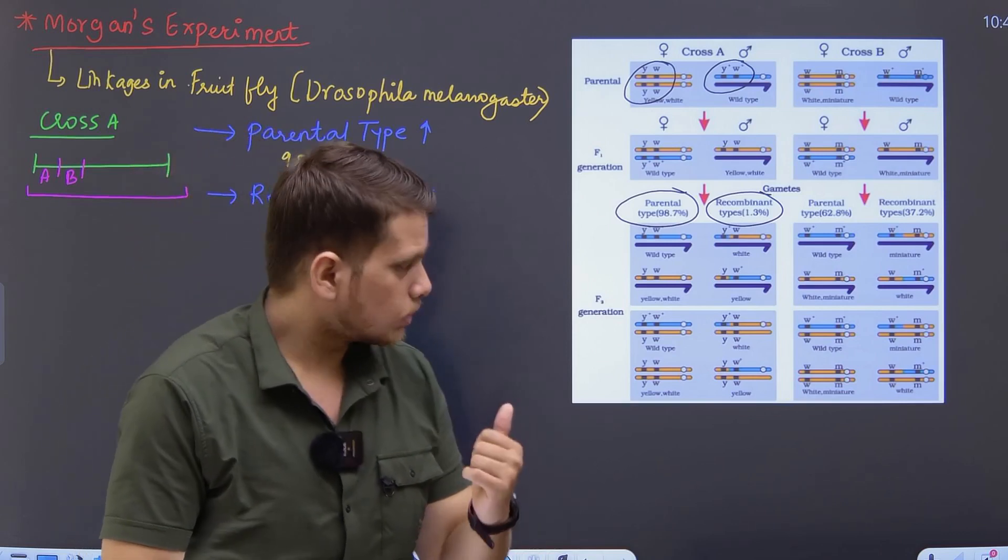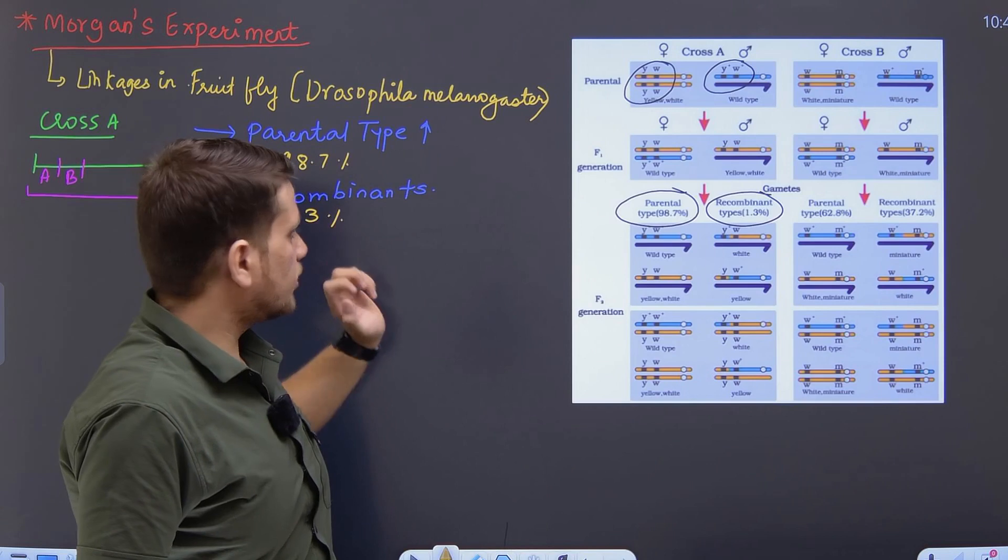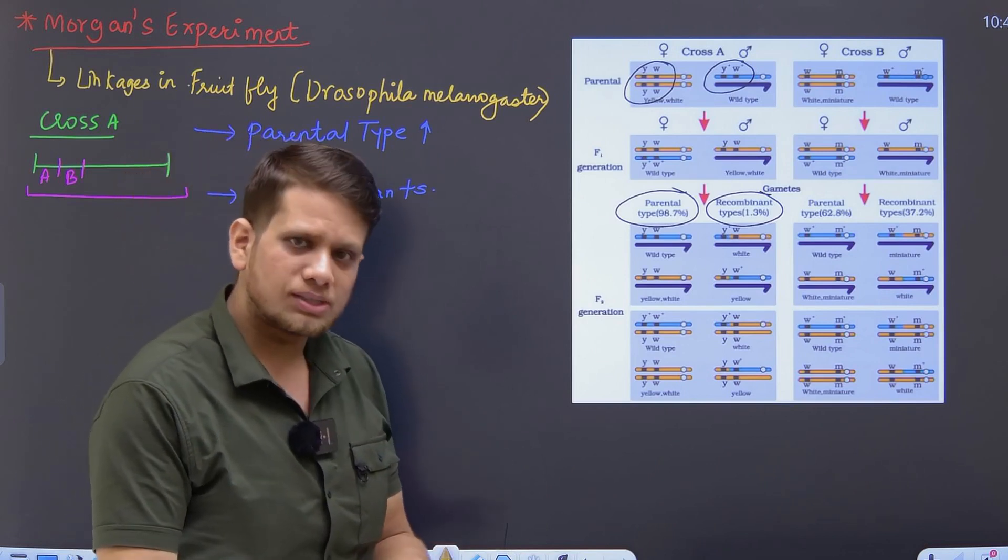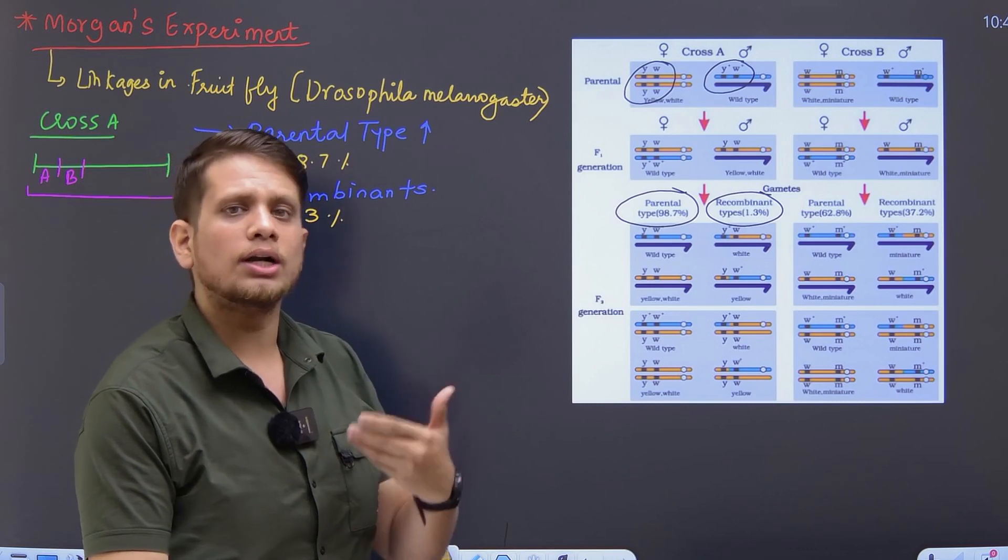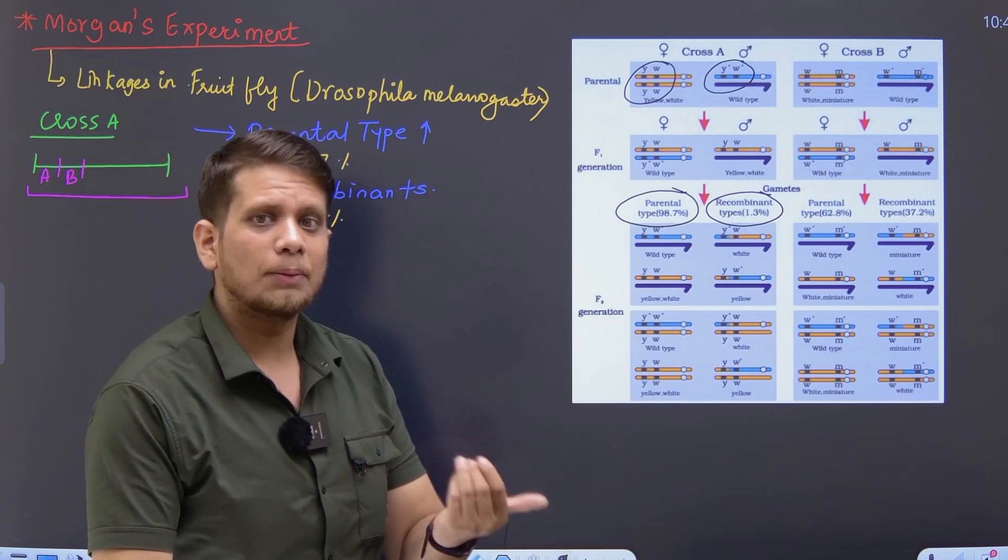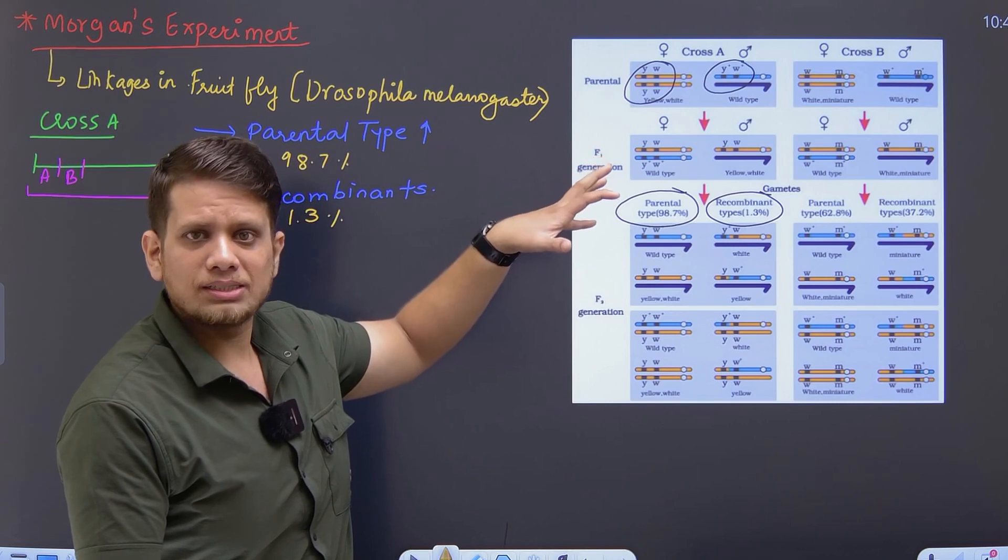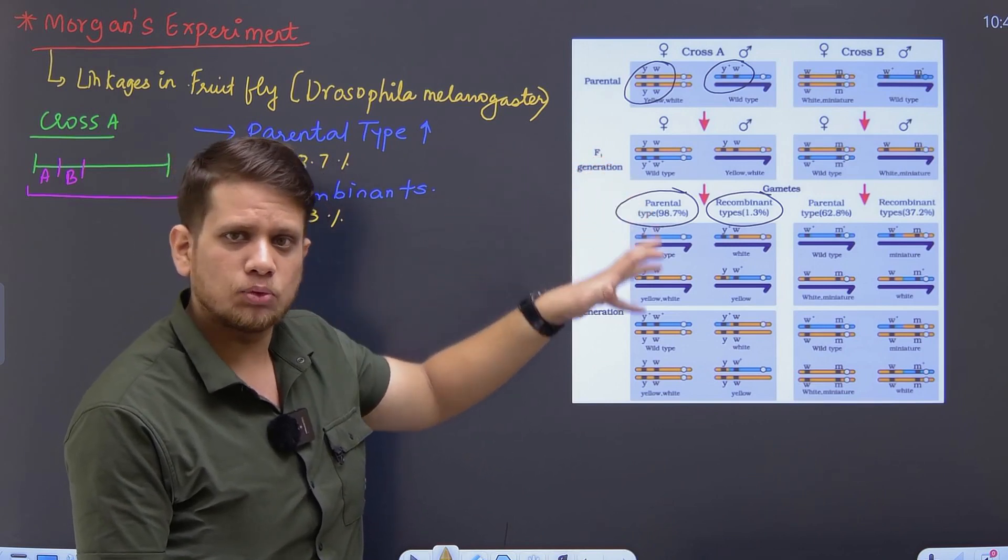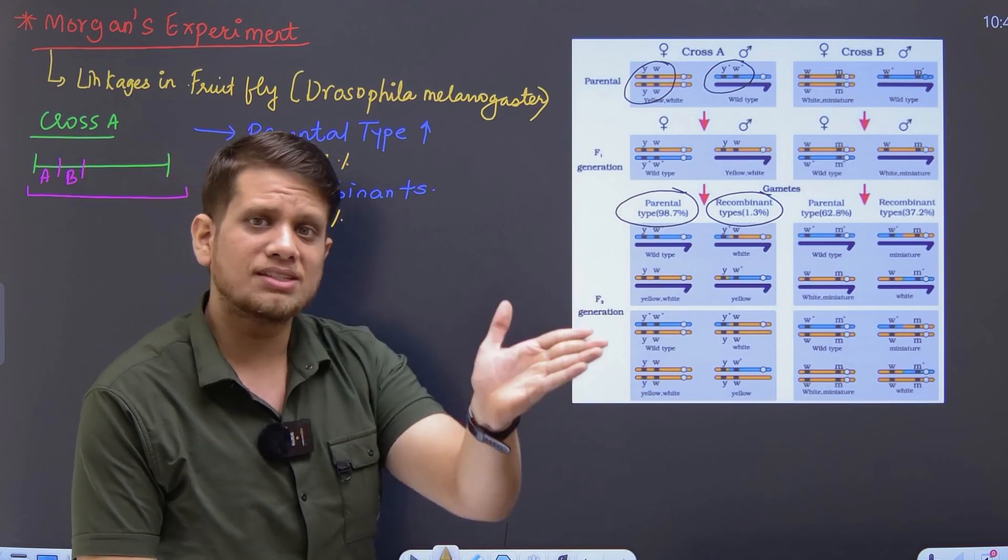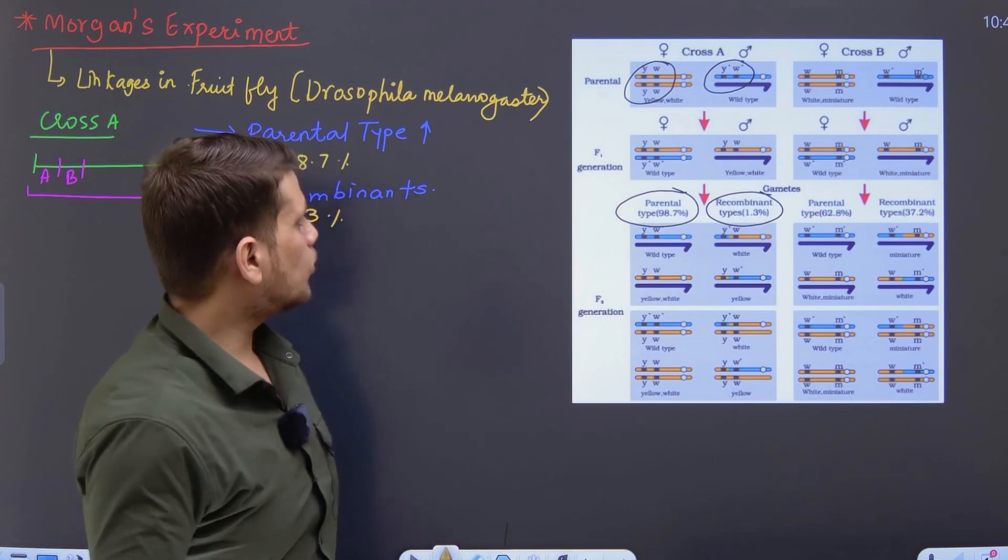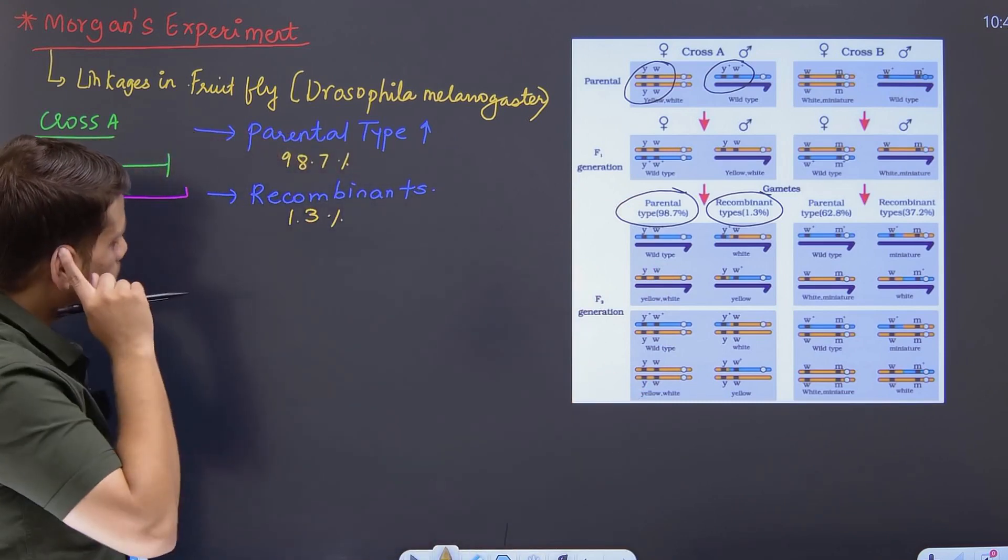And because there was no crossing over, the ratio obtained for us in case of recombinant is 1.3%. And because they were in close association, there was no crossing over. Meaning what? The parental combinations, the parental characteristics, you get as is. And because those parental combinations came as is to the next generation, you got parental combination of 98.7%.